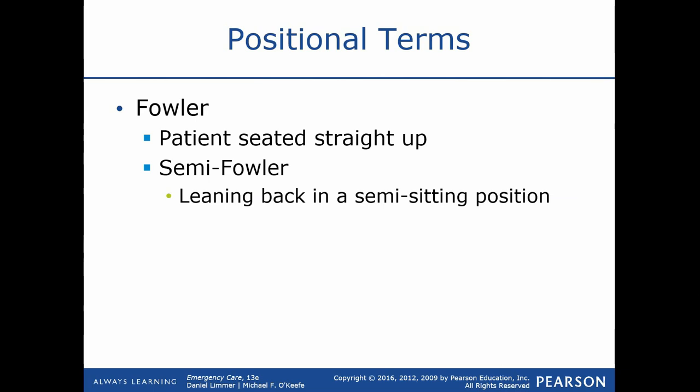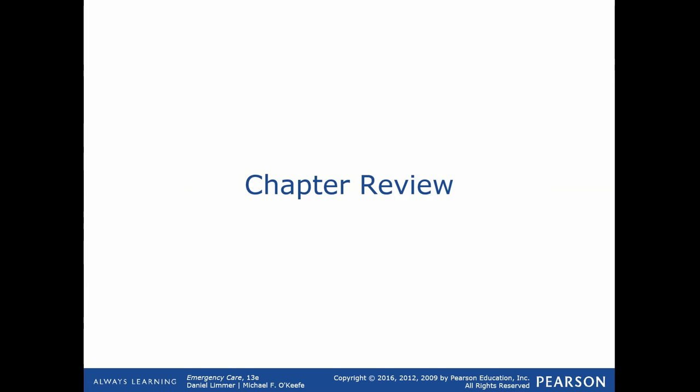Full Fowler's means sitting straight up on the cot at 90 degrees, which is actually uncomfortable because the legs remain straight out in front. What we may see instead is a modified Fowler's where the back is upright at 90 degrees but the patient drapes their feet over the sides of the cot and rests them on the floor. This is typically done for patients in respiratory distress — sitting straight up takes pressure off the lungs and allows the chest cavity to expand as fully as possible.